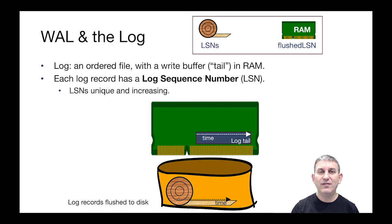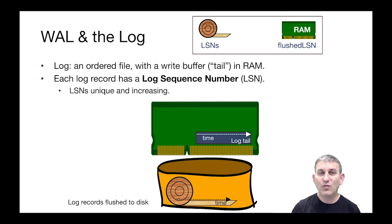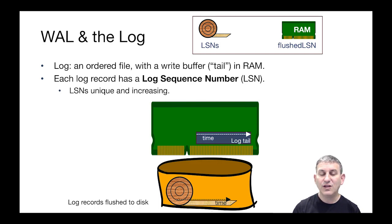Now let's look at a high level at the relationship between the log, information in memory, and the database. The log is going to be an ordered file written on a disk of its own. It's going to have a write buffer — which we'll call the tail — in RAM. We'll write individual bytes of log records into this buffer tail in RAM, and periodically that tail will be flushed to the end of the log on disk, making it mostly sequential I/O on the log. Every log record that we write has a log sequence number, which is an increasing unique value — they go up by one every time.